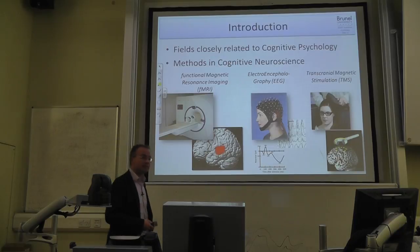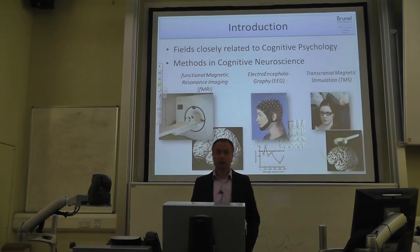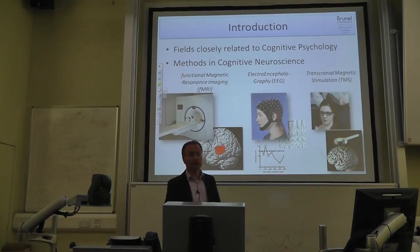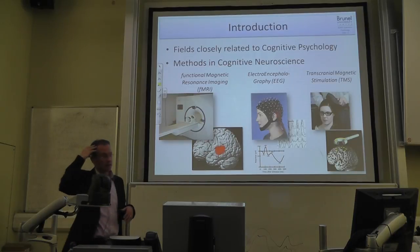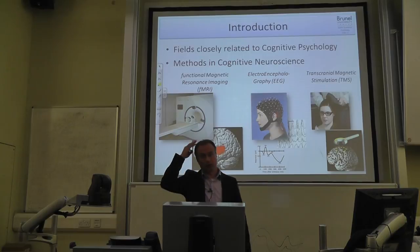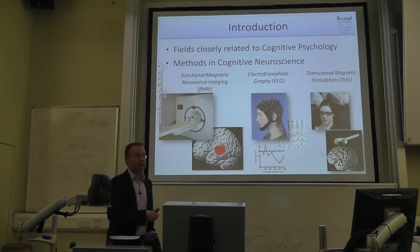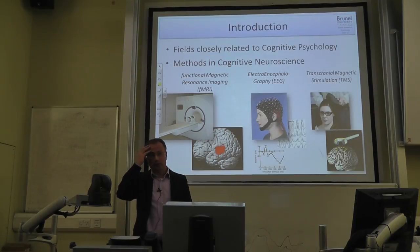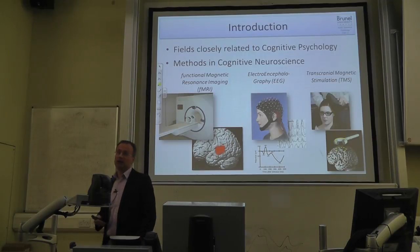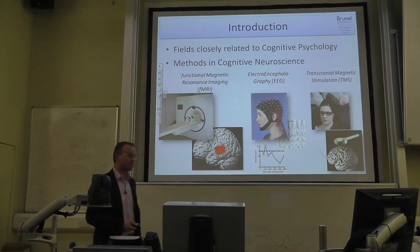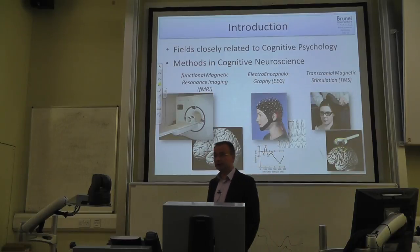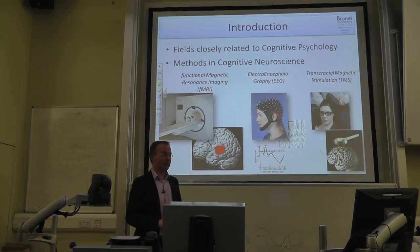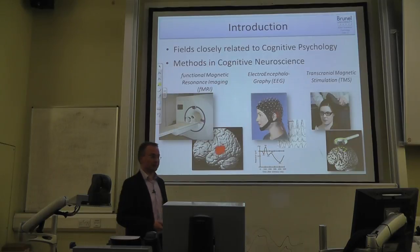Another method is TMS — transcranial magnetic stimulation — where a magnetic coil induces activity in neurons via a strong magnetic pulse. For example, placing it over the motor cortex can make your finger twitch. In clinical contexts, repeated TMS over the prefrontal cortex may alleviate conditions such as depression. All these methods are available at Brunel, but only starting from master level — they're too complex for undergraduate dissertations.